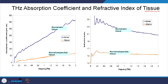When it comes to tissues, for example, if you take normal skin and fat tissue, you see that their absorption coefficients in the terahertz region are different. Even if they look the same visually, they have different absorption because they have different refractive indices in this region. It is very easy to see how the absorption changes in terahertz.